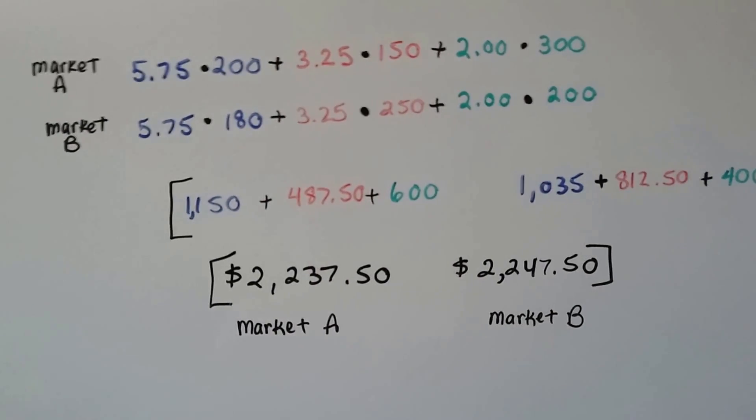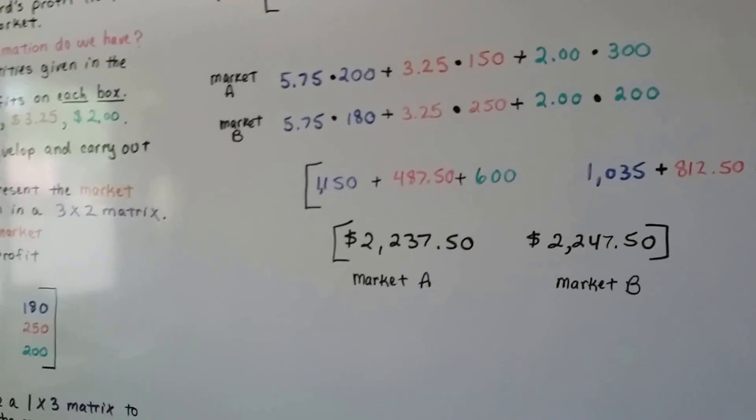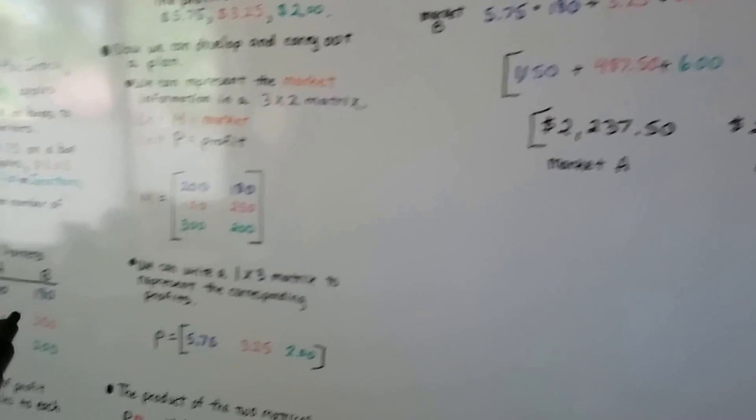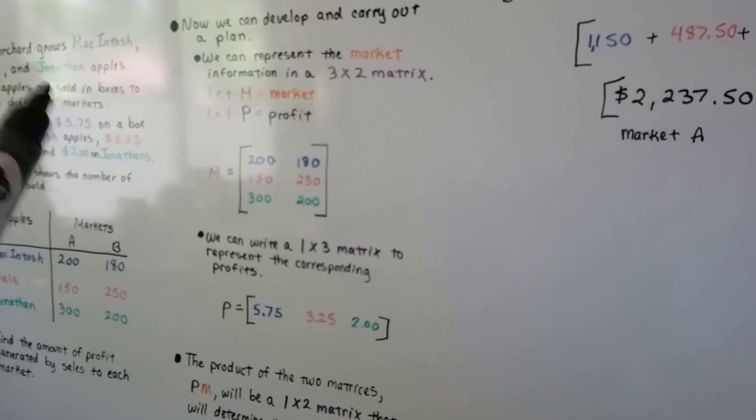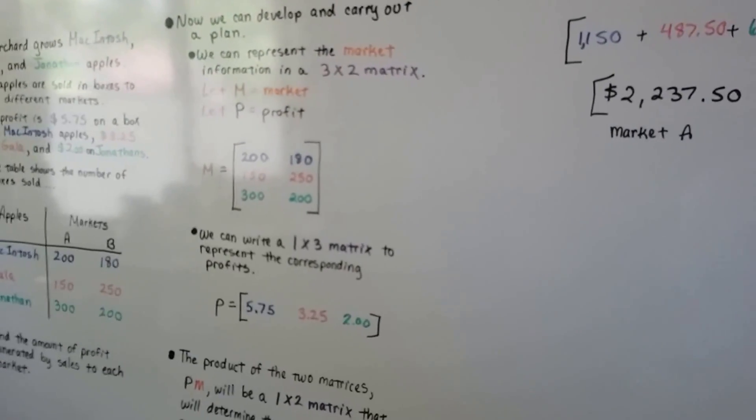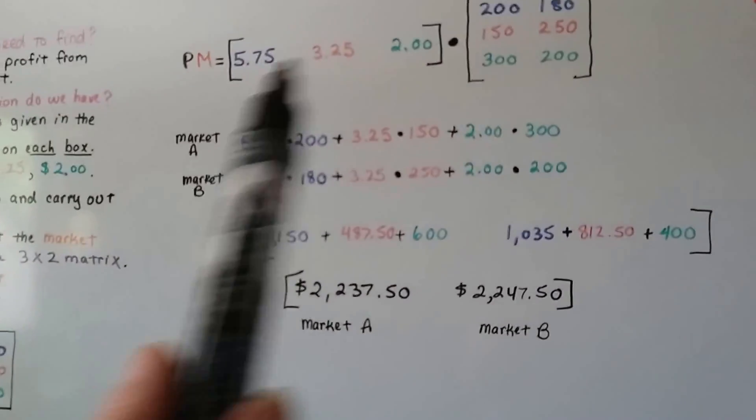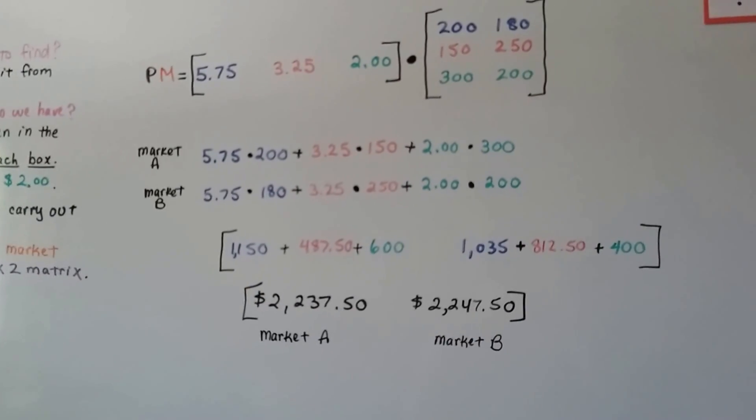That was pretty straightforward and easy, wasn't it? We just translated the information directly from the word problem in the table into matrices, and we just multiplied them and solved them.